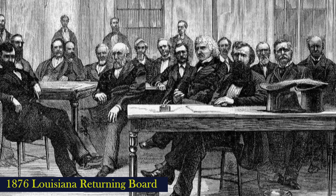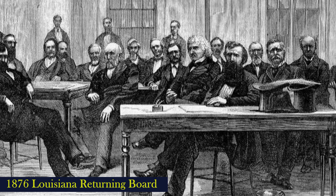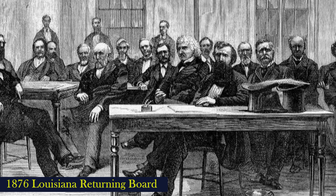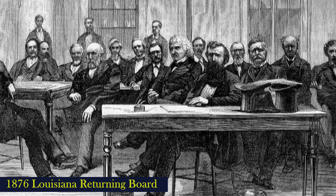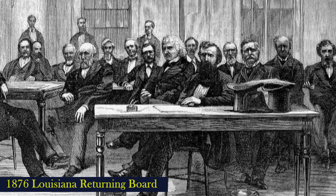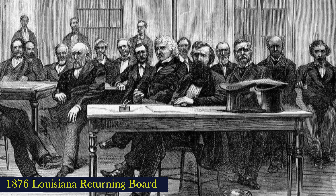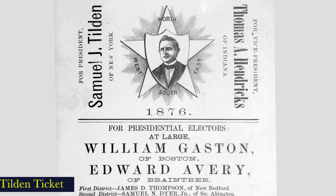After the first count of votes, Tilden had 184 electoral votes to Hayes' 165. 185 were needed to win. Tilden was one vote short. 19 electoral votes from Florida, Louisiana, and South Carolina were in dispute, and there was one more electoral vote in Oregon that was also challenged. In Florida, Louisiana, and South Carolina, both parties claimed victory. The Republicans in those states controlled the returning boards, the people who would determine the official vote count.